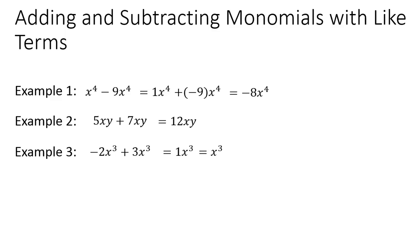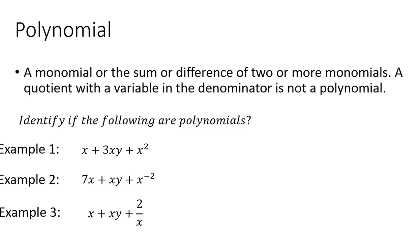A polynomial is a monomial or the sum or difference of two or more monomials. A quotient or a variable in the denominator is not a polynomial. Identifying the following: example 1 is a polynomial. Example 2 is not a polynomial because of the exponent negative 2 — remember, exponents must be whole numbers. Example 3 is not a polynomial because we have an x in the denominator of a fraction.